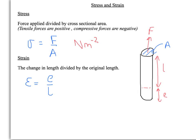Strain is the change in length divided by its original length. If the object has been stretched by length e, that's the change in length, and its original length is l, so strain is e divided by l. Strain has no unit, as it is just a ratio of two lengths.